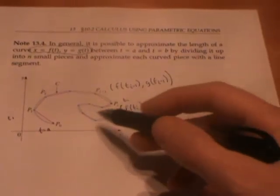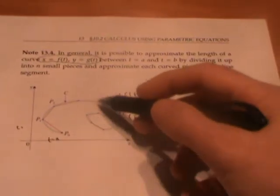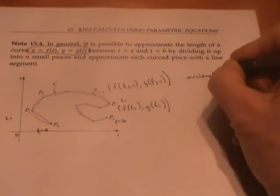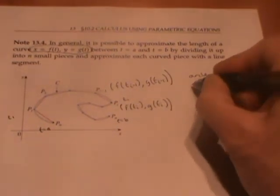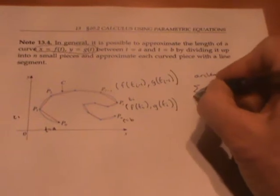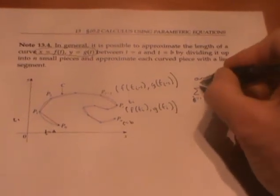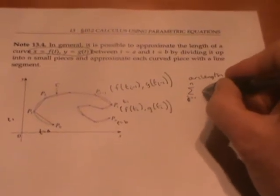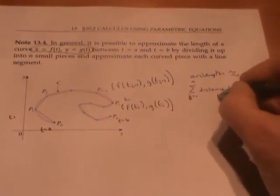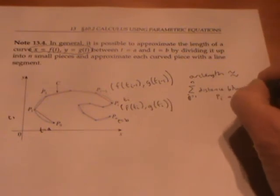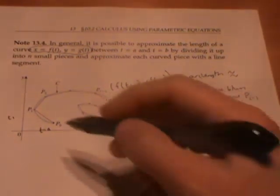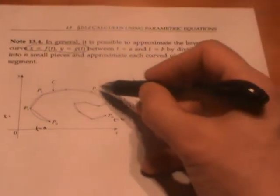So to find the approximate length of this blue curve, the arc length is approximately the sum from i equals 1 to n of the distances between pI and pI minus 1. That's just like what we did before—we just add up those distances.